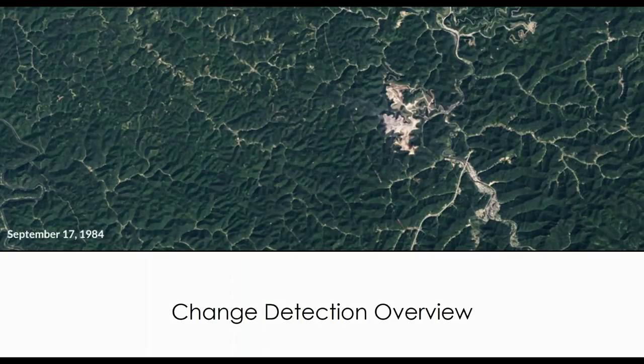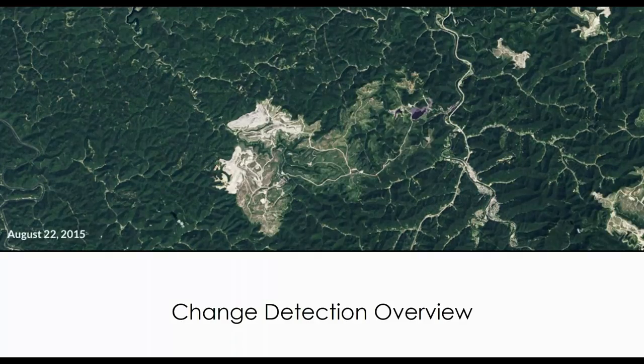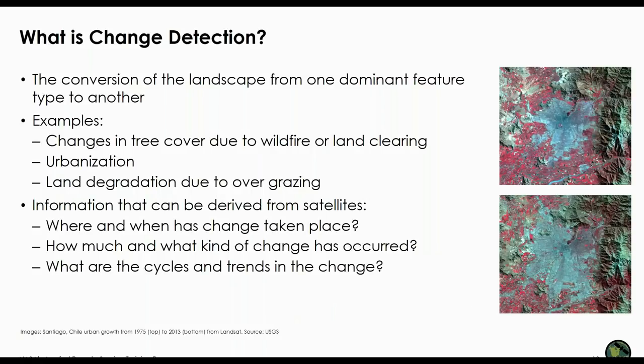So I'll first start with the overview of change detection. Detecting change in satellite imagery generally refers to the conversion of the landscape from one dominant feature type to another. Examples of that include changes in tree cover due to wildfire or land clearing, urbanization, and land degradation due to overgrazing. The type of information you can get from satellite imagery is where and when has change taken place, how much and what kind of change has occurred, and what are the cycles and trends in the change.